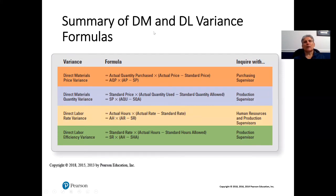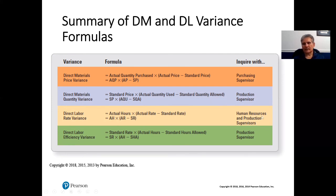Here's a summary of direct material and direct labor variances and who we should be talking to. For direct material price variances, we talk to our purchasing supervisor. For material usage or quantity variances, we talk to production supervisors. For direct labor rate variances, we talk to both human resources — since anticipated rates likely come from HR — and production supervisors, since it could be a missed estimate or an overtime issue. For direct labor efficiency variances, the focus is on production.